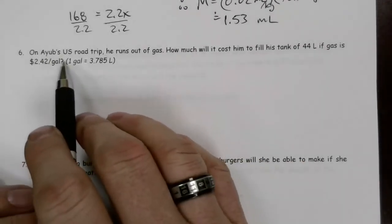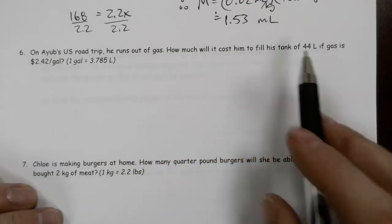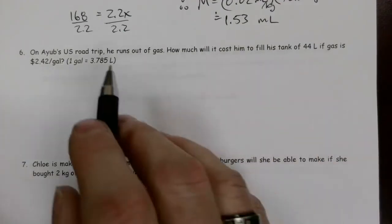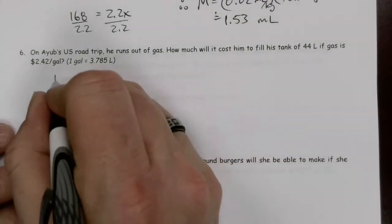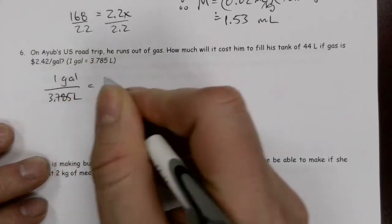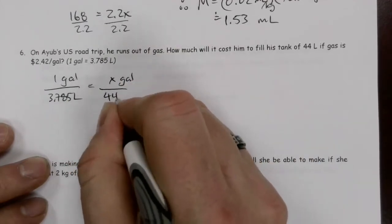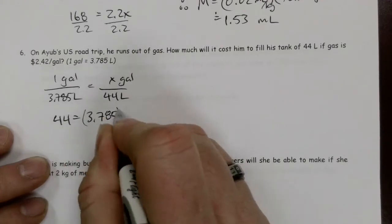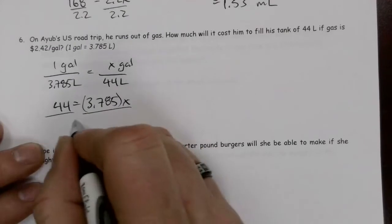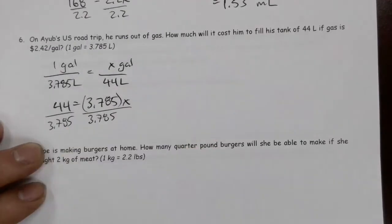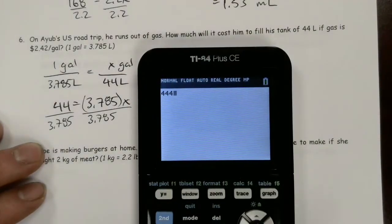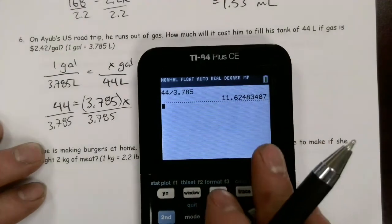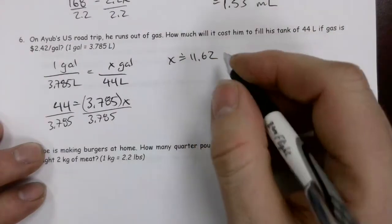On Ayub's U.S. road trip, he runs out of gas. How much will it cost him to fill his tank of 44 liters if gas is $2.42 per gallon? This is a good question. First, we've got to convert his tank from liters into gallons. We know that one gallon is 3.785 liters. Don't know how many gallons he's got, but we know that it's 44 liters. Cross multiply. 1 times 44 is 44. This becomes 3.785 times x. We want to get the x by itself, so we're going to divide by that coefficient. So 44 divided by 3.785, and to the nearest hundredth, 11.62. X is approximately 11.62 gallons.